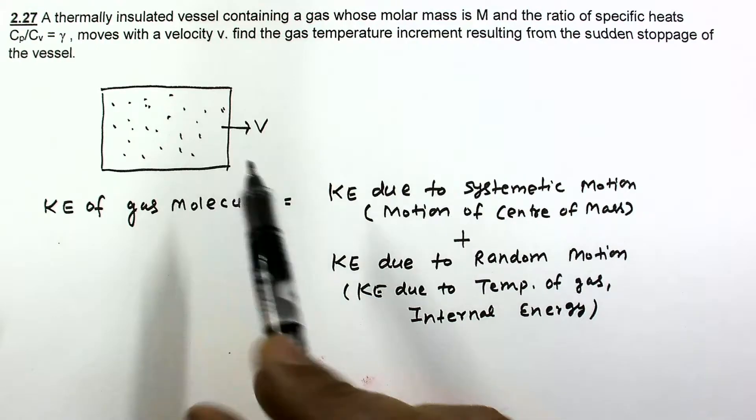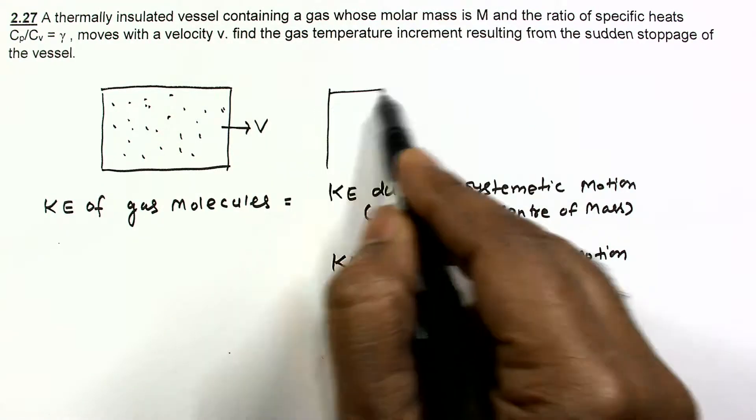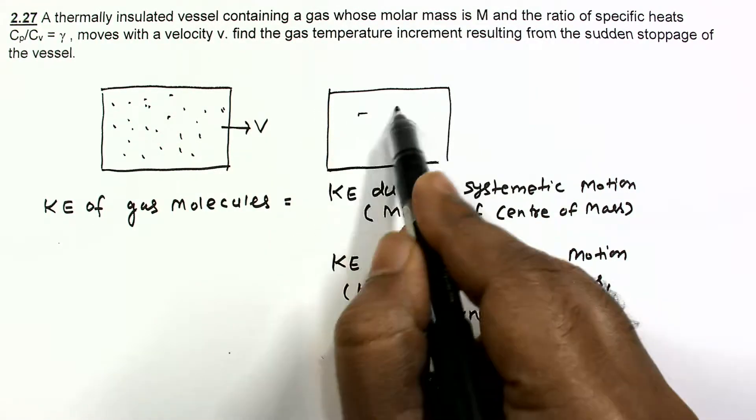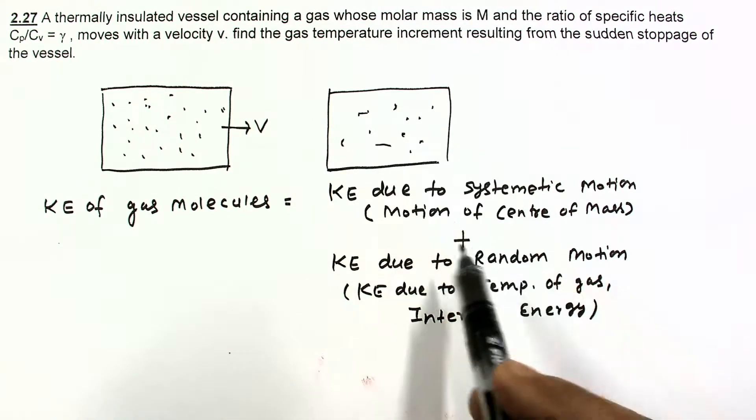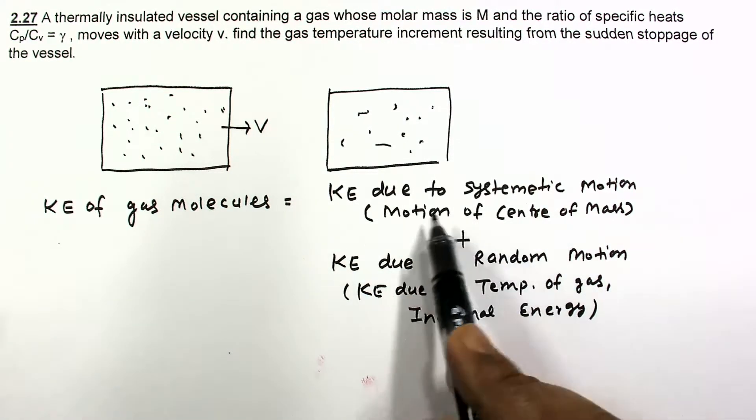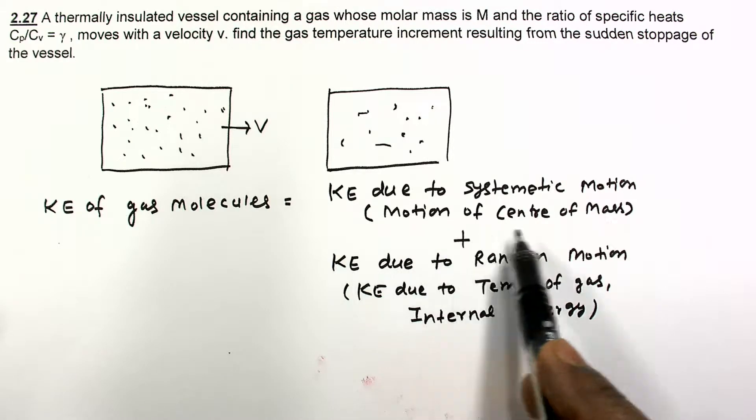So kinetic energy of gas molecule is due to these two factors. If this vessel is suddenly stopped, then the systematic motion is suddenly gone. And this loss of energy will go somewhere.